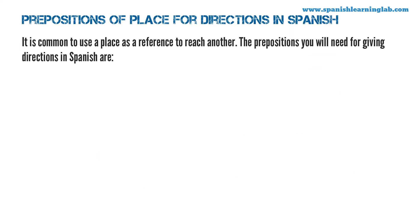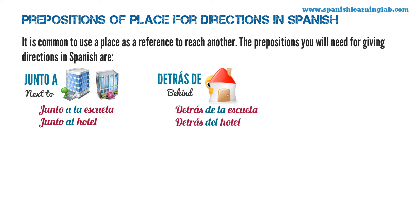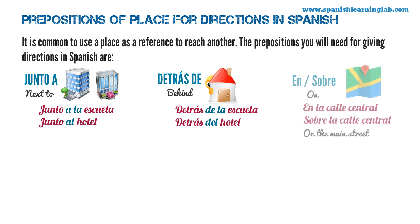Prepositions of place for directions in Spanish. Just like in English, in Spanish it is common to use a place as a reference to reach another. The prepositions you will need are: Junto a — next to. Junto a la escuela. Junto al hotel. Notice that we say junto al, not junto a él, because when we use a plus the article el in Spanish, we change it to al. Detrás de — behind. Detrás de la escuela. Detrás del hotel. We say detrás del, not detrás de él, because when we use de plus the article el, we change it to del.